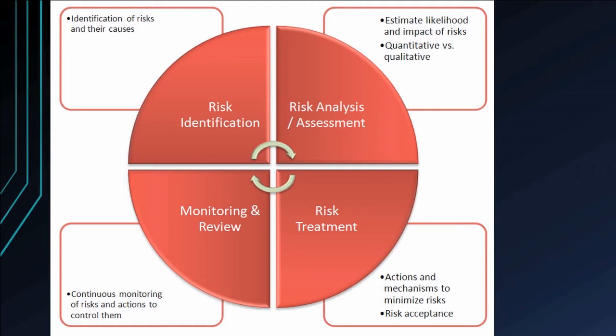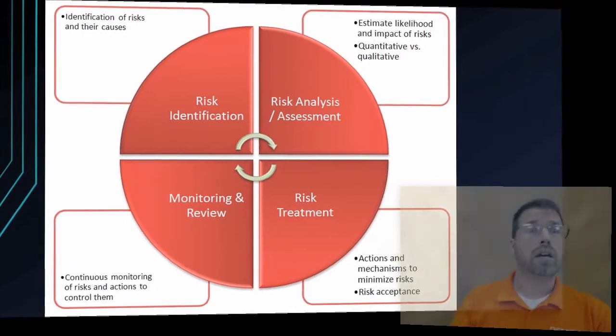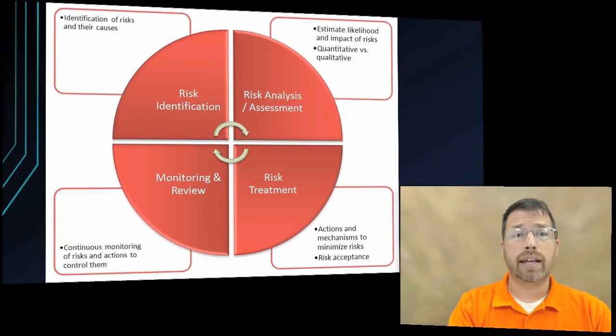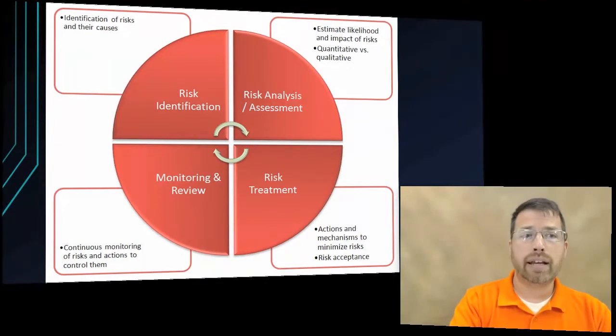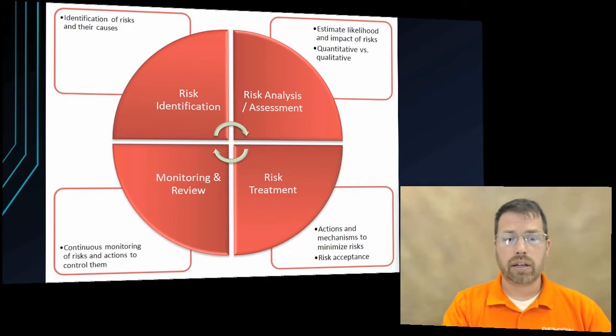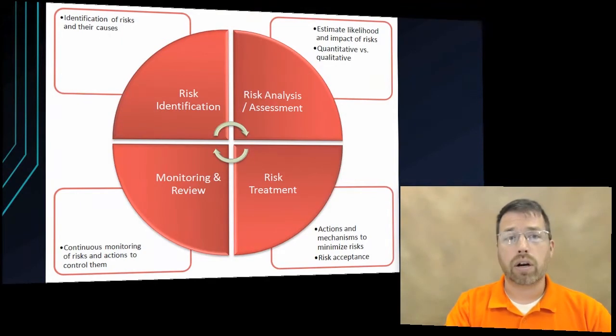An incident response plan plays into this. With an incident response plan, it's basically a rule set defining what we do if one of these risks is encountered in our network. An incident response plan is nothing more than a detailed description of what we're going to do if something happens in our network or facility. For example, if the building catches on fire, the incident response plan — having taken these different risks into consideration — is going to tell us how to handle it and what we need to do to get back up and running.